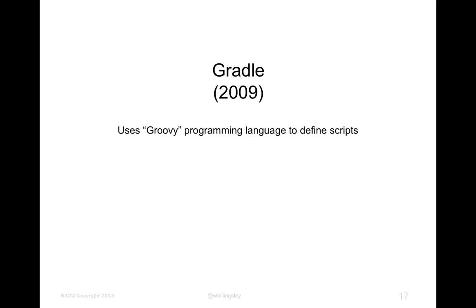Gradle is built upon a programming language called Groovy. Groovy is particularly well-suited to creating little languages — domain-specific languages — short notations that are quite easy to read and expressive for describing a particular purpose. In this case, that purpose is telling Gradle how to build your code. Gradle isn't specifically for Java projects and works a little like Make, letting you define tasks and what they depend upon.